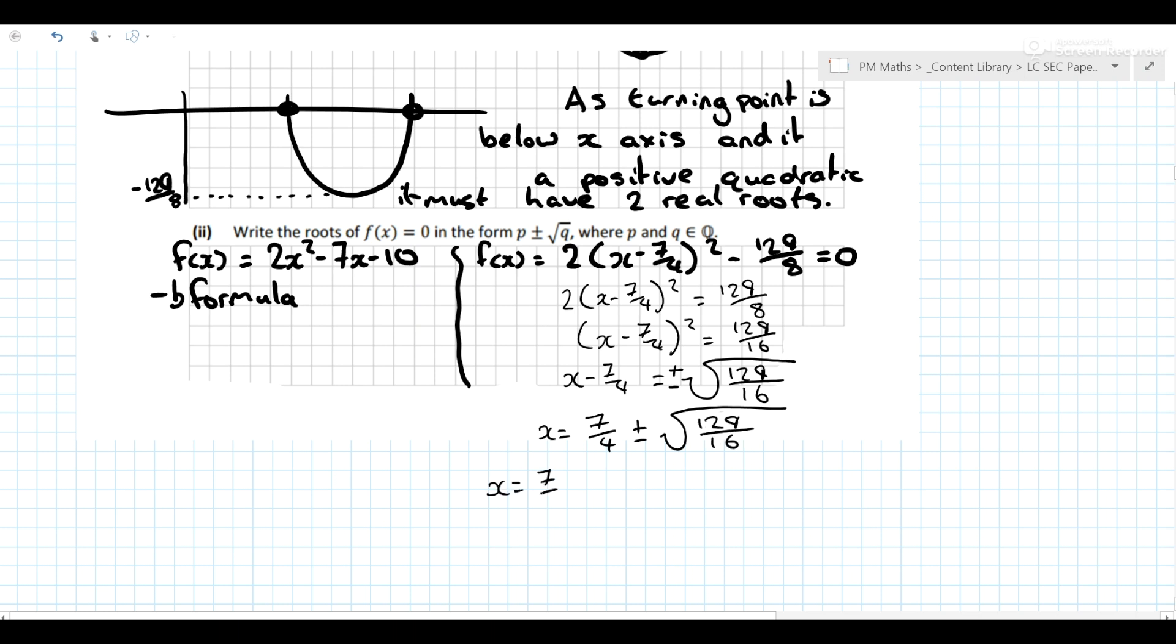x equals 7/4 plus √(129/16). x equals 7/4 minus the square root. x equals 7/4 plus square root of 129/16.